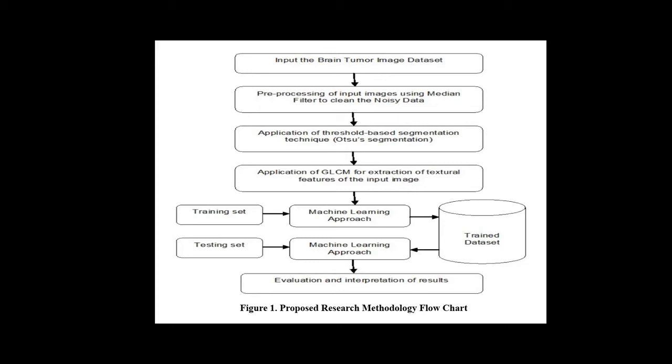Then threshold-based segmentation is done to extract the region of interest. Gray-level co-occurrence matrix and discrete wavelet transform are used to extract the tumor features. Support vector machine and hidden Markov model are used for the classification purpose. Finally, comparison is done on the basis of performance parameters to get the desired result.